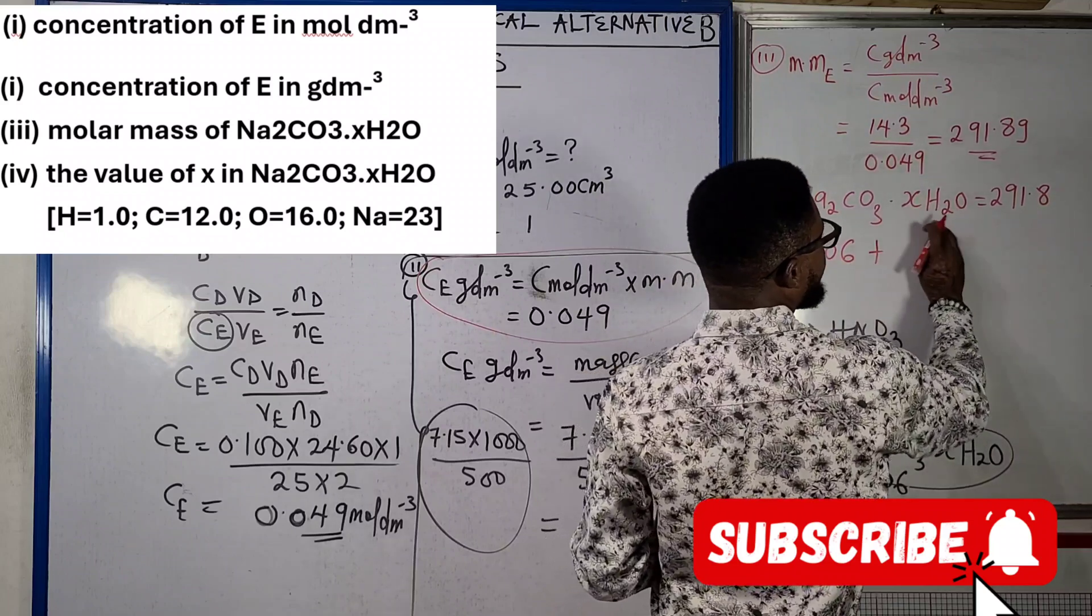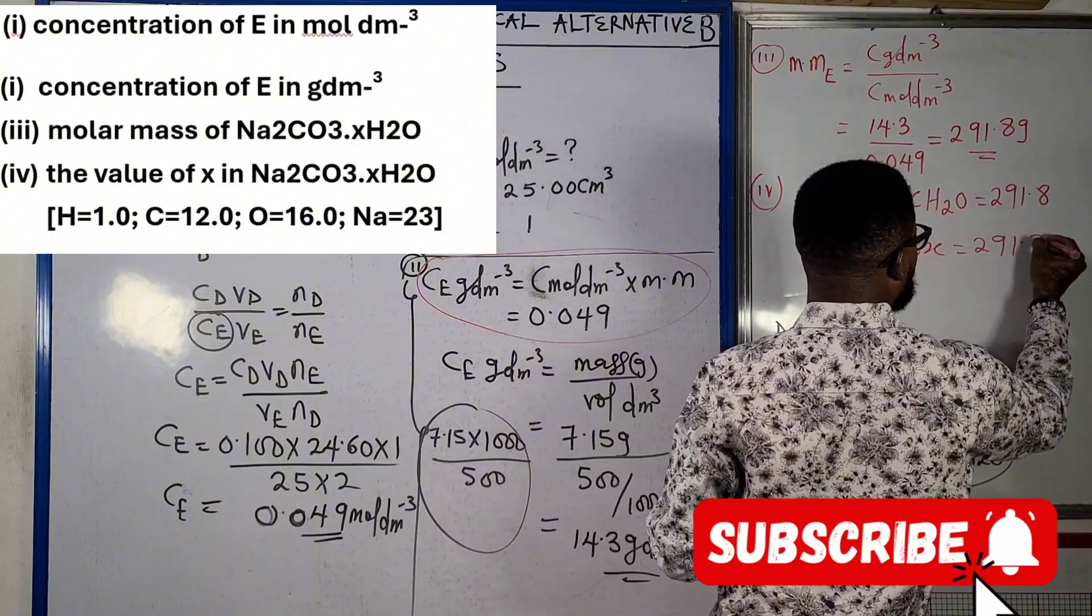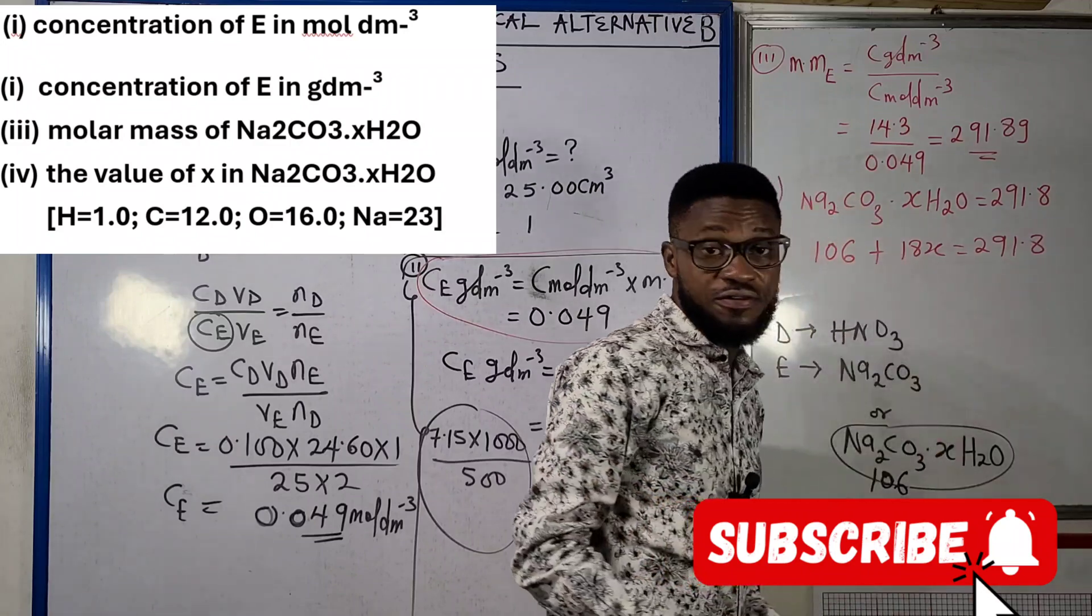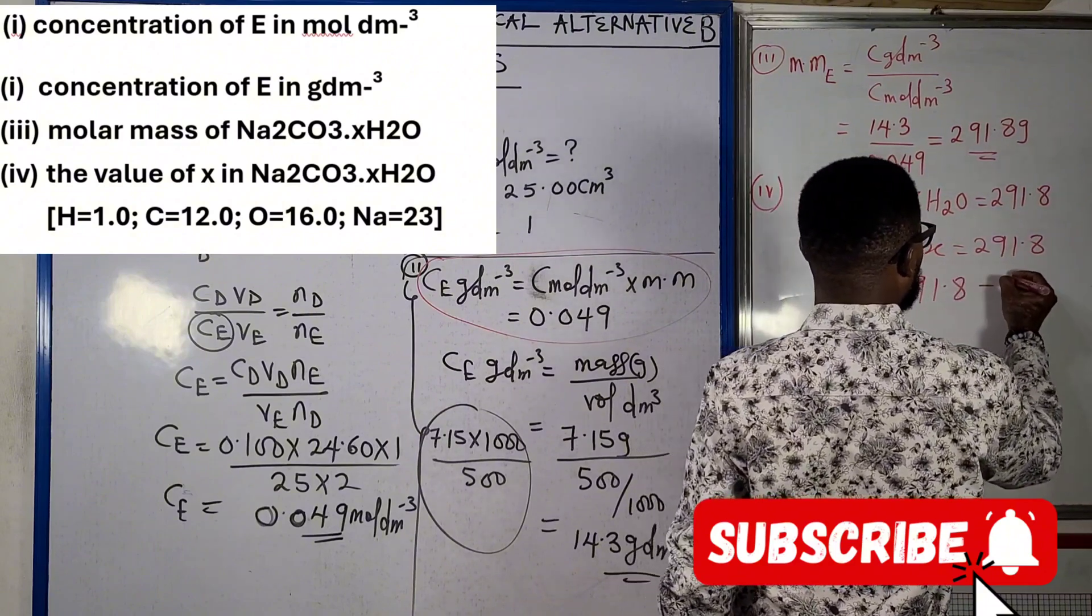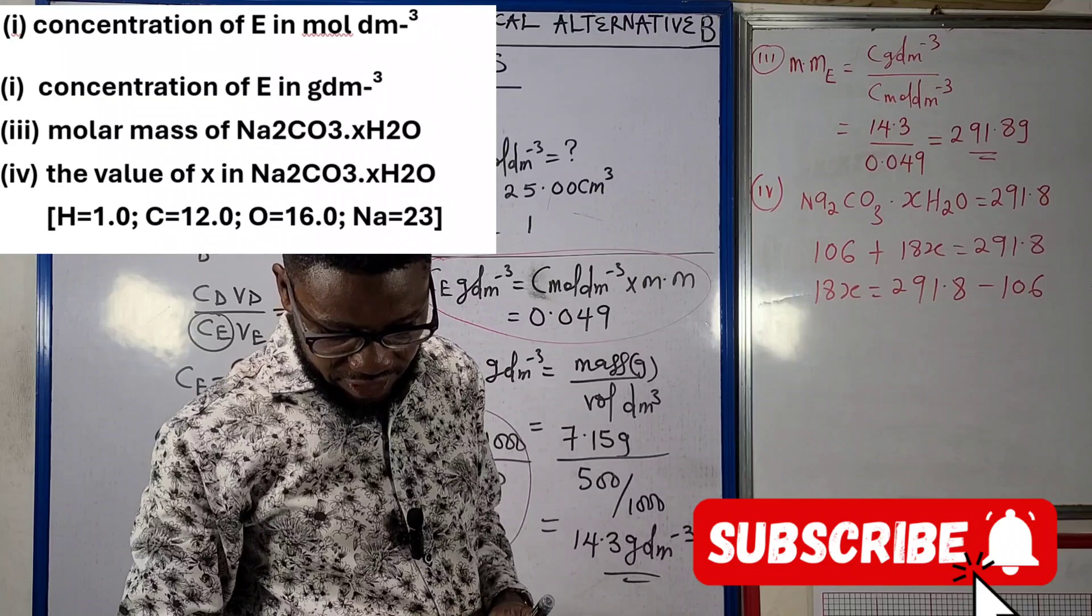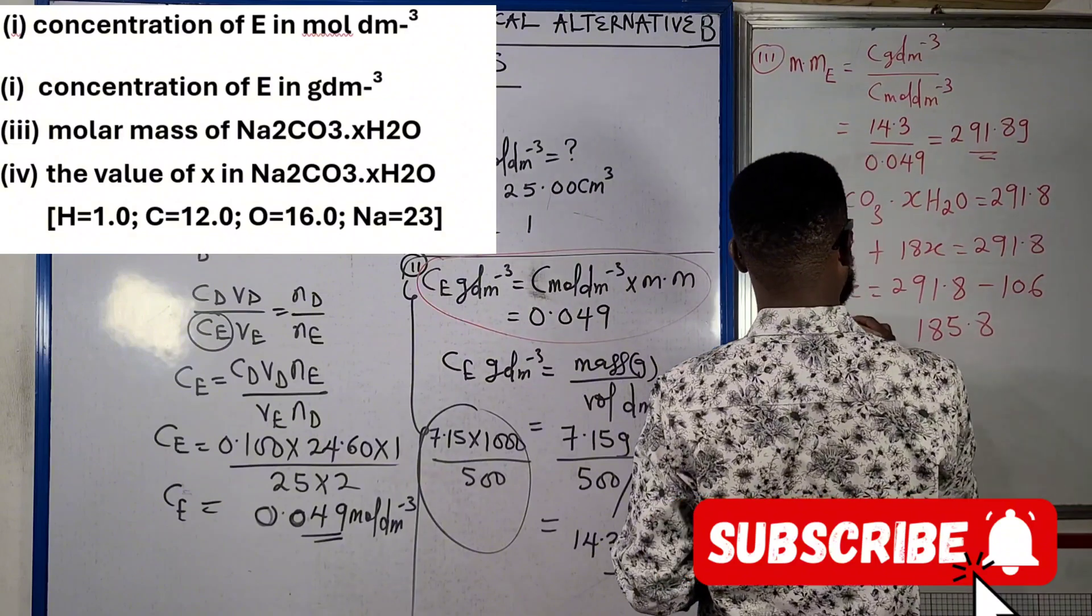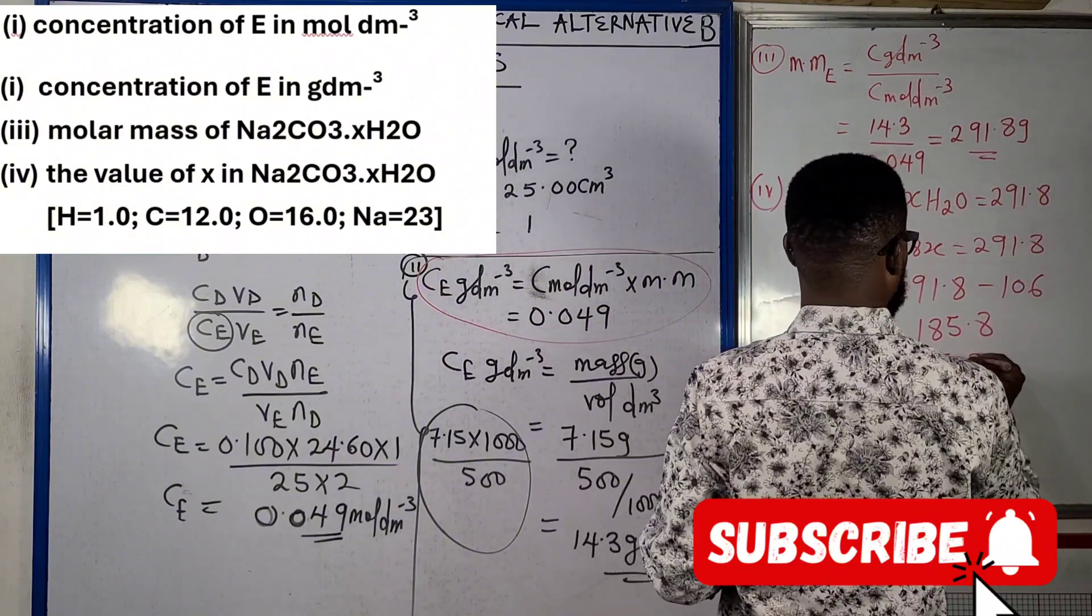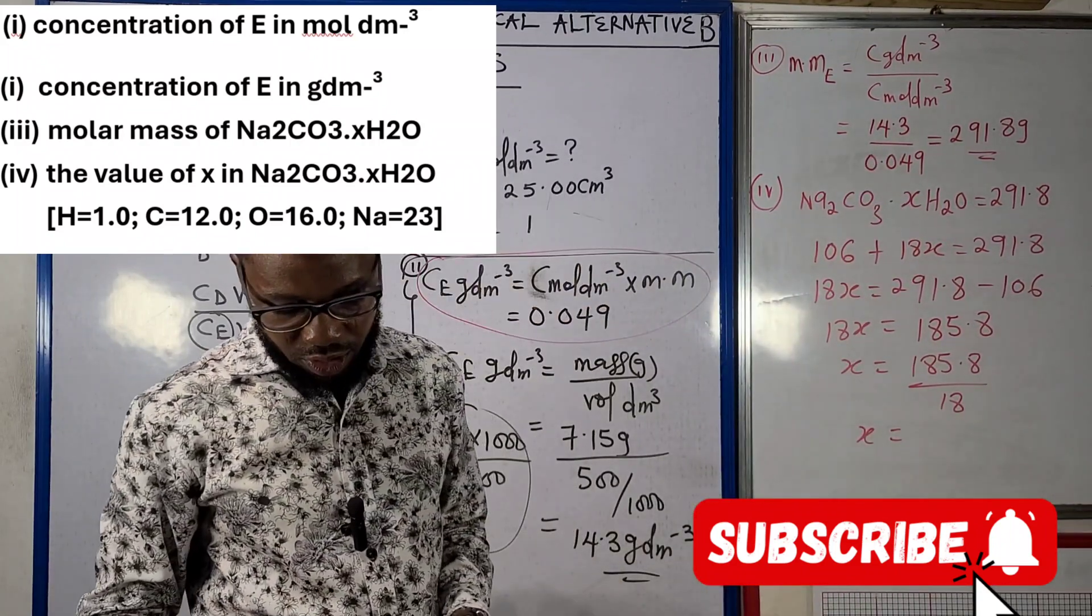From calculation, sodium carbonate is going to give us 106 plus 18x equals to 291.8. We basically need to solve this equation to get the value of x. So 18x equals to 291.8 minus 106. When we compute this, we're going to have 185.8. So x equals to 185.8 divided by 18. When we compute this, we are going to get 10.3. That is the value of our x.